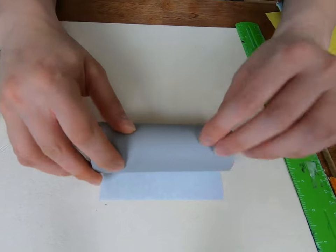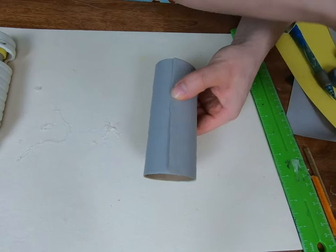Now let's roll the paper up around my roll. Tape it down on one end, roll, and tape again.